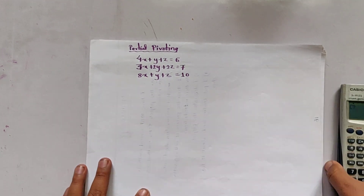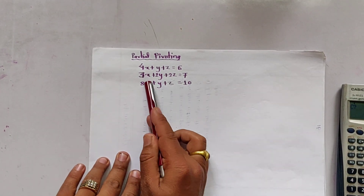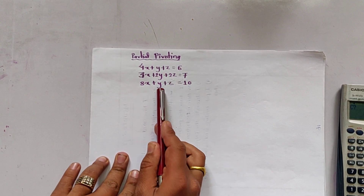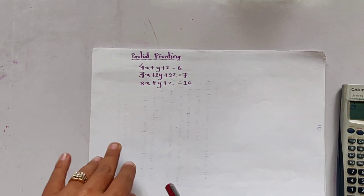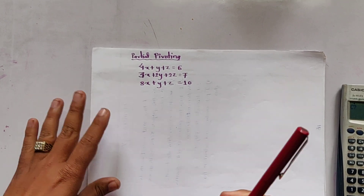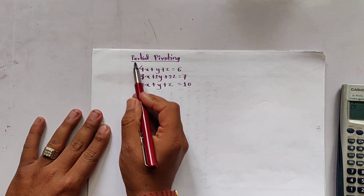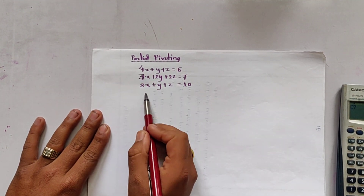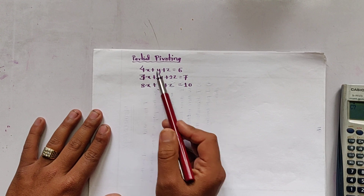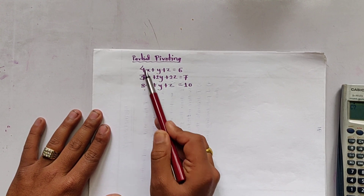The given equations are: 4x + y + z = 6, 3x + 2y + 2z = 7, and 8x + y + z = 10. In the partial pivoting method, we consider the first column only. In the first column the coefficients are 4, 3, and 8, and the largest coefficient is 8.